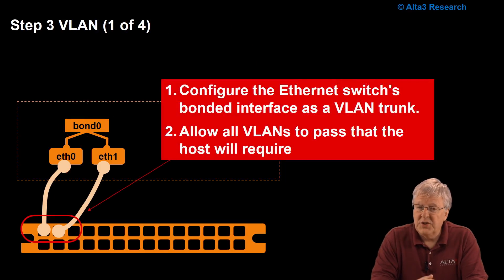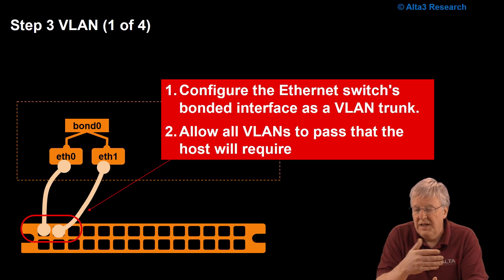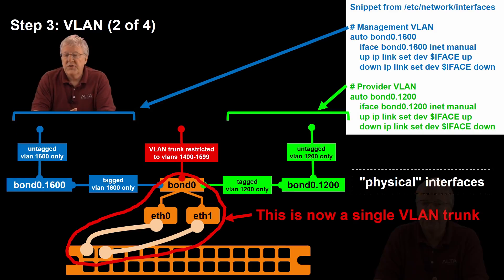Step three is VLAN. There's going to be four slides on this one. First of all, on the Ethernet switch side, we have to configure the Ethernet switch's bonded interface as a VLAN trunk. So remember, those two interfaces on the switch are bonded. That creates a logical interface on the switch side as well. And you want to make that interface a trunk. Allow all VLAN traffic to pass through there that the host is going to require. If you block any VLANs here that the host is going to need, you've just turned those VLANs off. Enable all the VLANs that will need it up above.